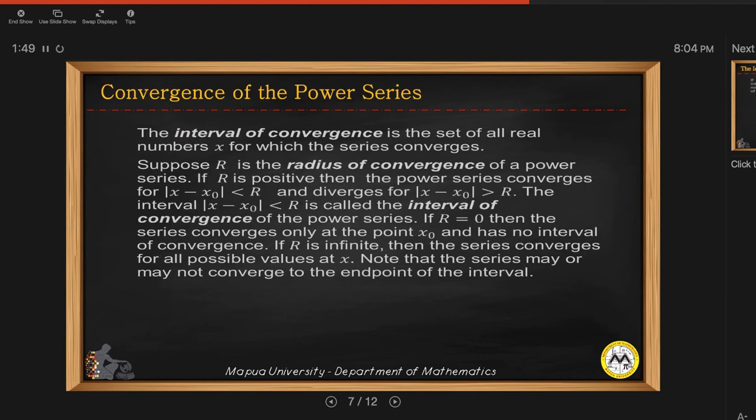The interval of convergence is a set of all real numbers for which the series converges. Suppose r is the radius of convergence of a power series. If r is positive, then the power series converges for the absolute value of x minus x sub 0 less than r, and diverges for the absolute value of x minus x sub 0 greater than r. This interval is called the interval of convergence of the power series.